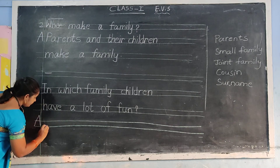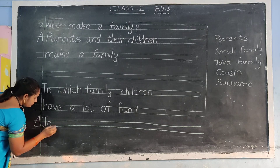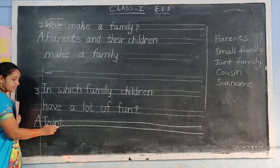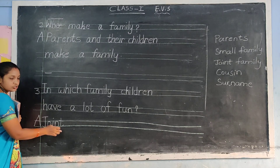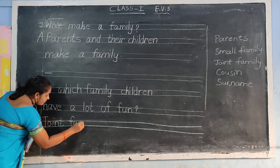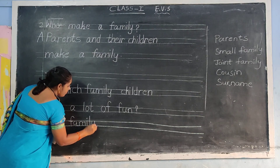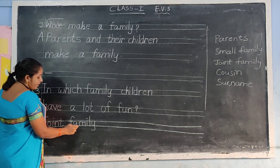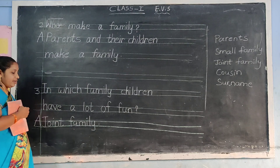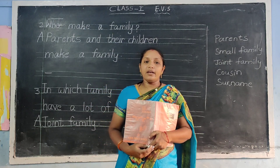Okay, next slide. Capital letter J-O-I-N-T — joint. J-O-I-N-T — joint. Finger gap. F-A-M-I-L-Y — family. Full stop. Joint family. Okay children, like this you have to enter your previous books. Okay children, thank you.